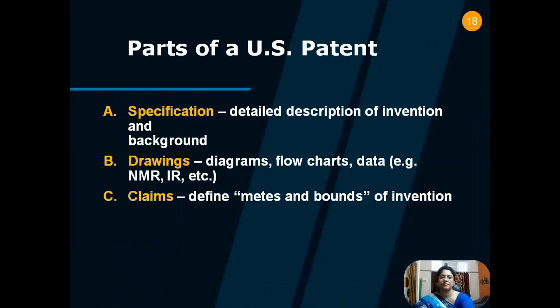These are the different parts of a US patent. Part A is the specification, which gives the detailed description of the invention and background. Part B is drawings, which gives the diagrams, flow charts, and data — for example, NMR, IR, etc. And part C is claims, which defines the metes and bounds of the invention.